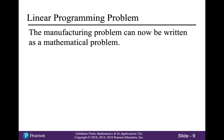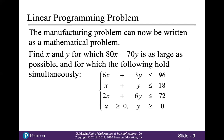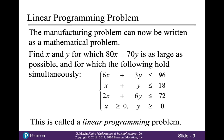This manufacturing problem can now be written as a mathematical problem. We want to find X and Y for which 80X plus 70Y is as large as possible, and for which the following constraints hold simultaneously: 6X plus 3Y has to be less than or equal to 96; X plus Y has to be less than or equal to 18; 2X plus 6Y has to be less than or equal to 72; and X and Y both have to be greater than or equal to zero. This is called a linear programming problem.